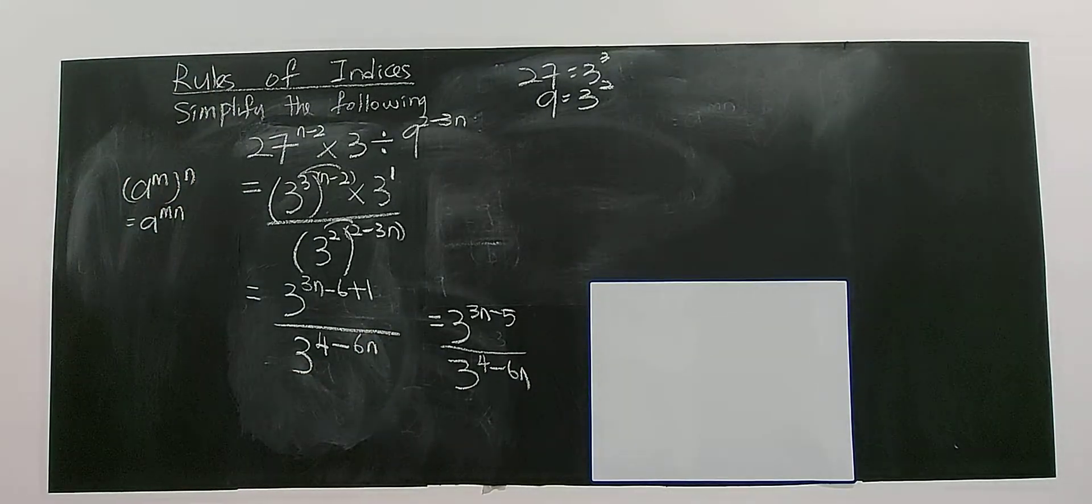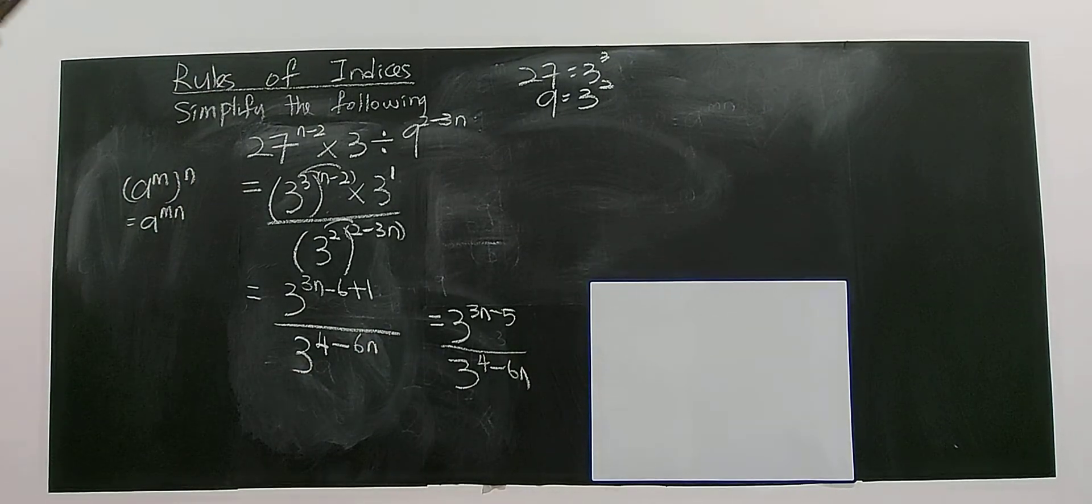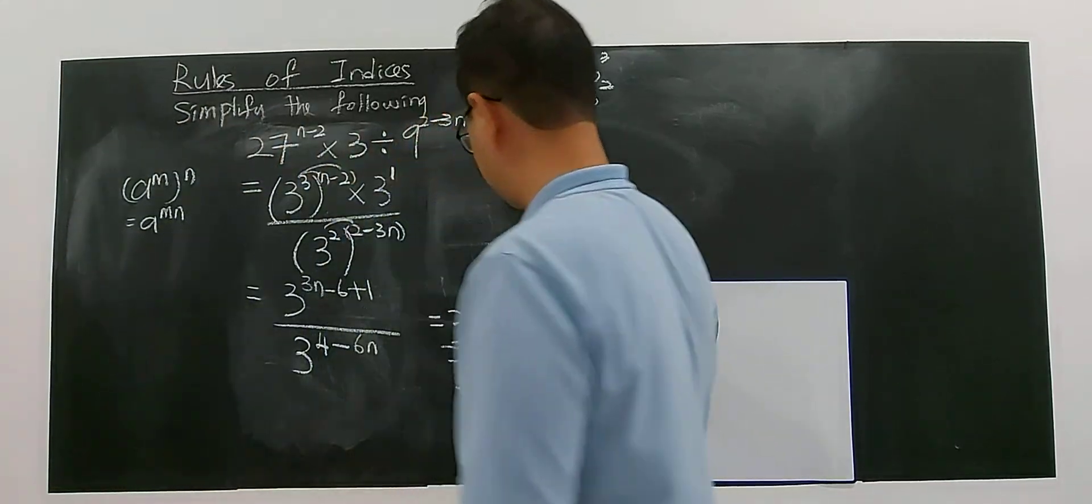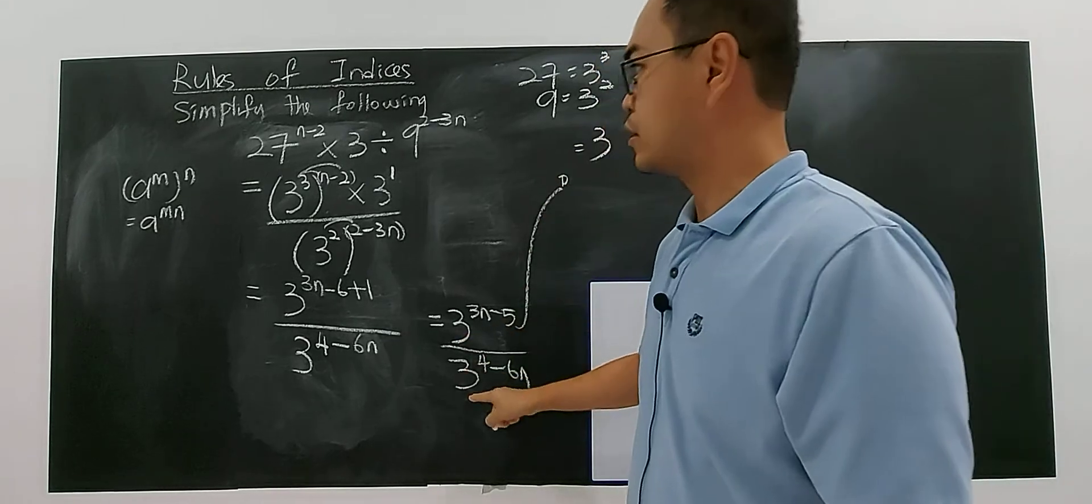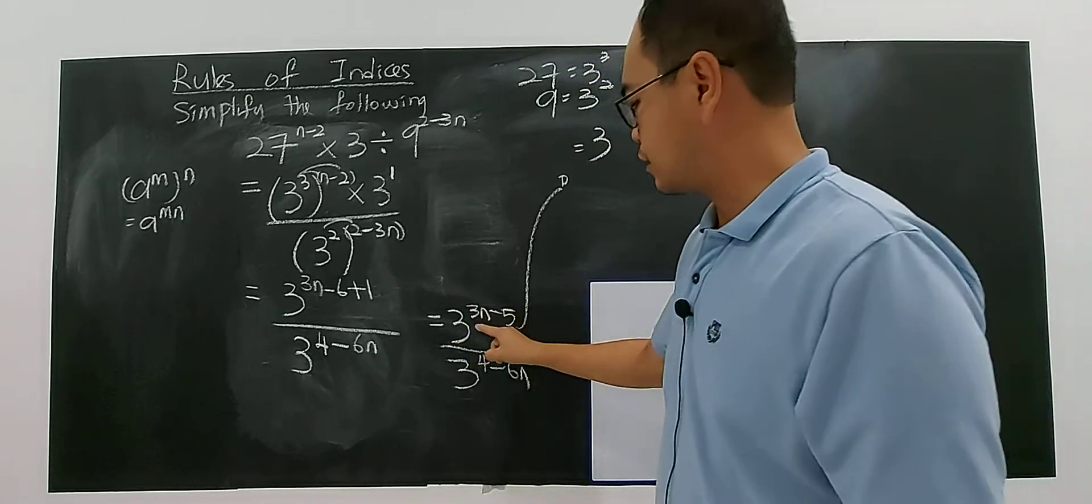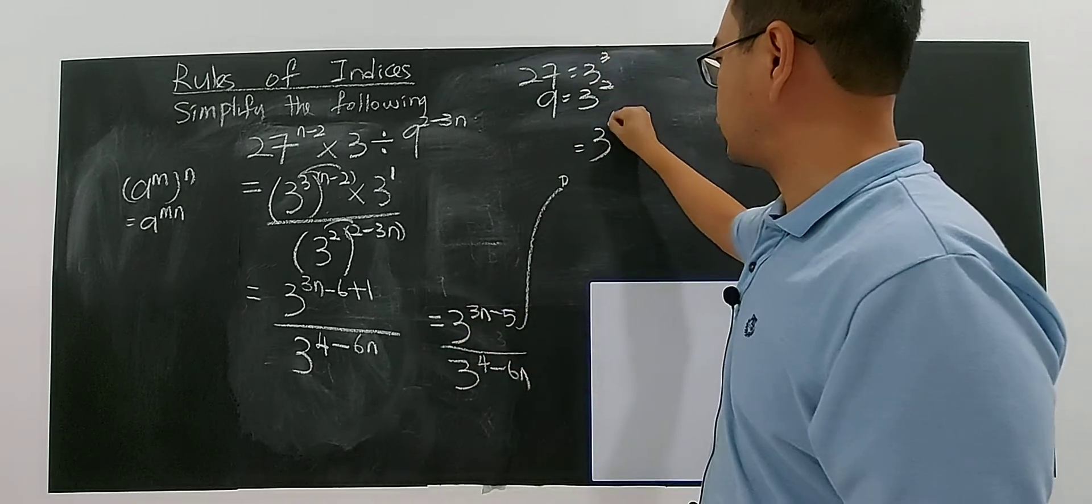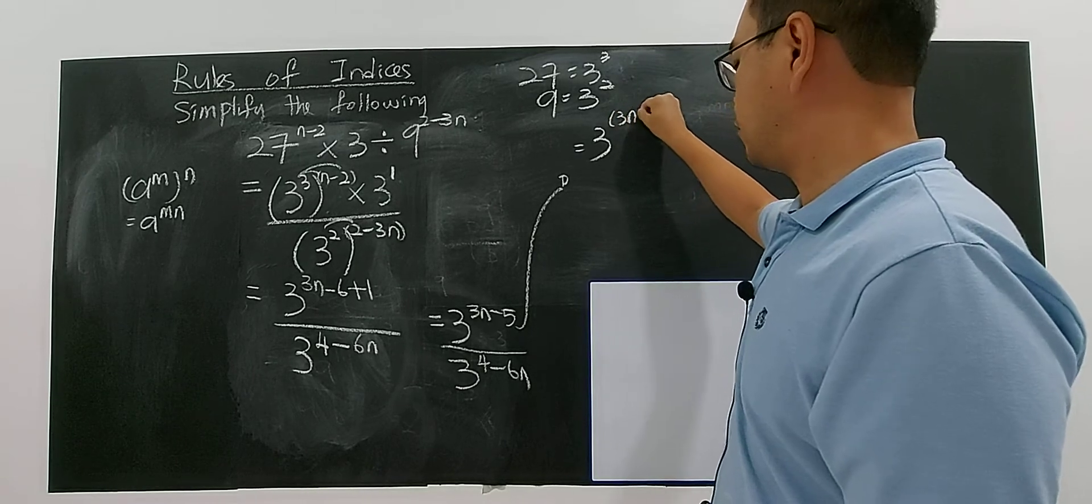It's equal to 3 - because they have the same base, we do division, so we take the index and subtract. 3n minus 5, divided by 4 minus 6n.